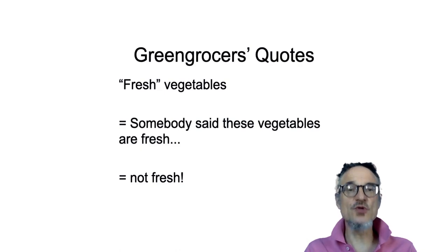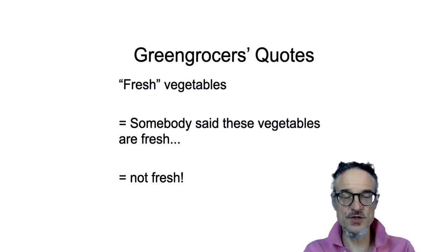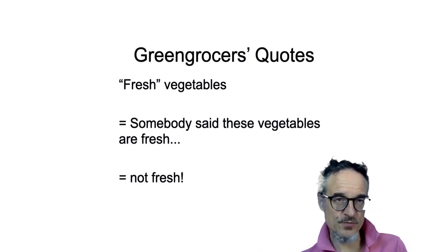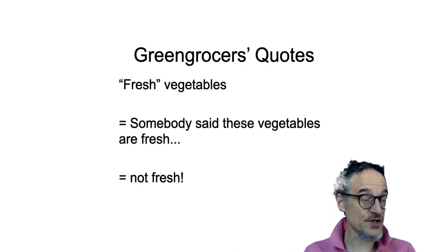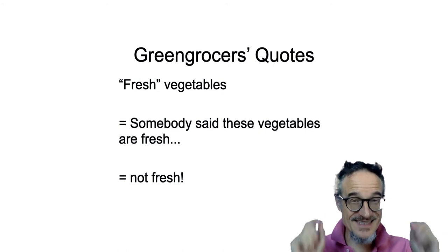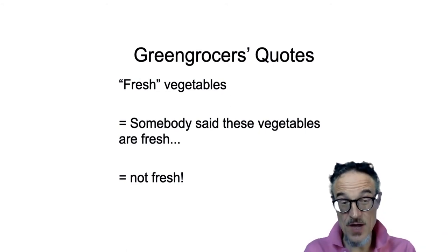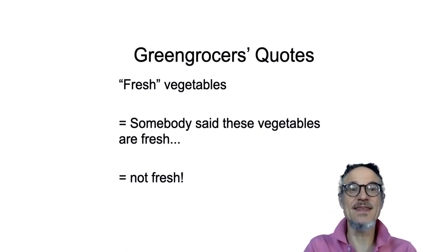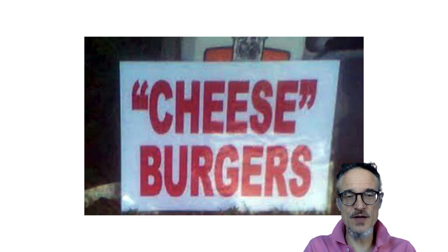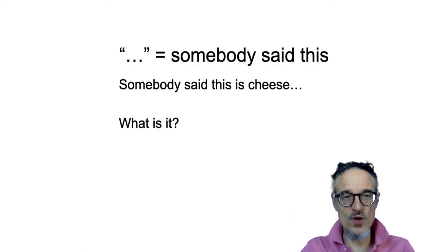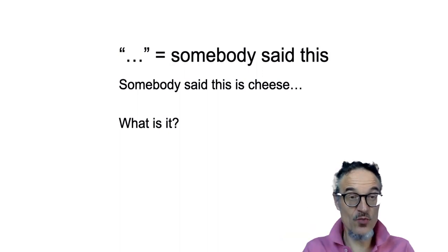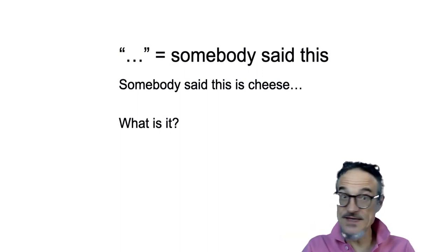What's known as greengrocer's quotes — often if you go to a market, you'll see 'fresh' vegetables. What this means is that somebody said these vegetables are fresh, and that means they're not necessarily fresh — just somebody said they're fresh. I also saw a picture of these 'cheese' burgers. This means somebody said this is cheese — so I wonder, what is it? It doesn't sound very tasty.